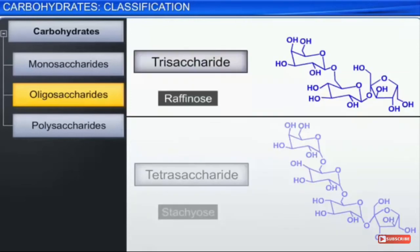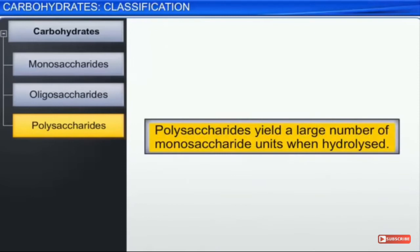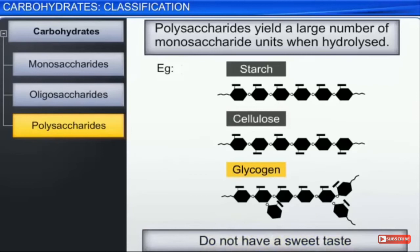Another example is trisaccharides. The examples here are raffinose and stachyose, which give you three monosaccharides upon hydrolysis. Polysaccharides yield a large number of monosaccharide units when hydrolyzed.